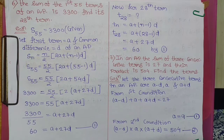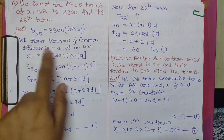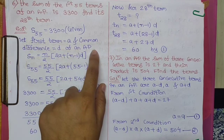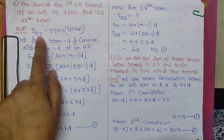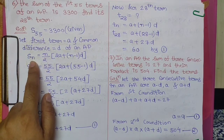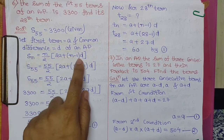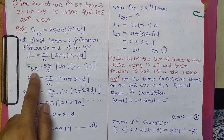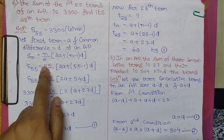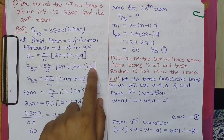They have not given the value of A and D, so first let the first term be A and the common difference be D. The value of S55 is already given, so use the formula: SN = N/2 × (2A + (N−1)D). At place of N, write 55: S55 = 55/2 × (2A + 54D).